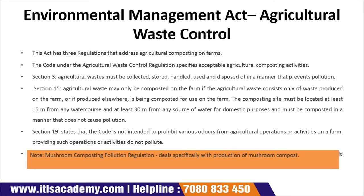The Environmental Management Act Agriculture Based Control has three regulations that address agricultural composting on farms. The code under the agriculture-based control and regulation specifies acceptable agricultural composting activities. Section 3 states that agriculture-based waste must be collected, stored, handled and used or disposed of in a manner that prevents pollution.